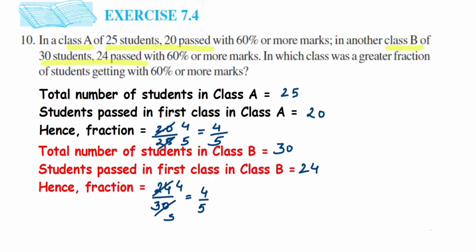Now they're asking in which class was a greater fraction of students. You can see that both the fractions are the same, 4 upon 5. This means that both the classes passed with the same fraction, that is 4 upon 5 of the total strength.